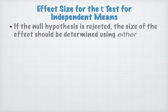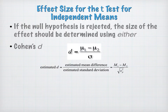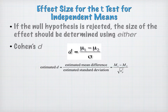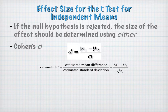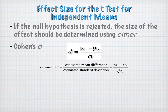We have two different kinds we can do. We can do Cohen's D, which is the one you probably did in 3510. We don't have population means here, so we're going to have to estimate using our sample. Our estimated D will be the difference between the two means divided by the square root of the pooled variance. If you did not pool variance when you calculated your T initially, you'll need to go back and pool variance.